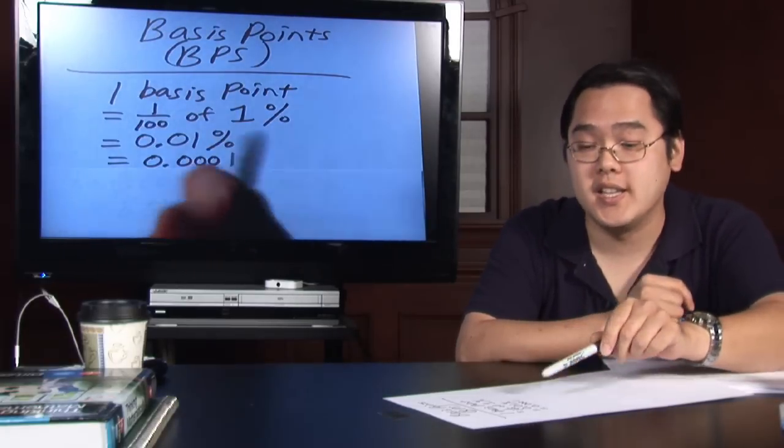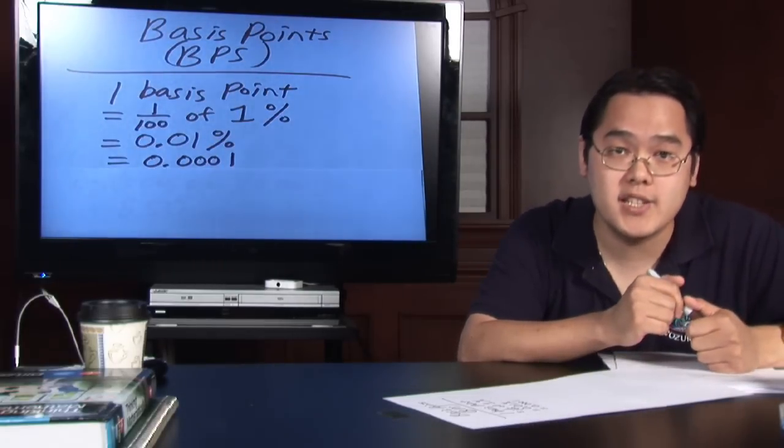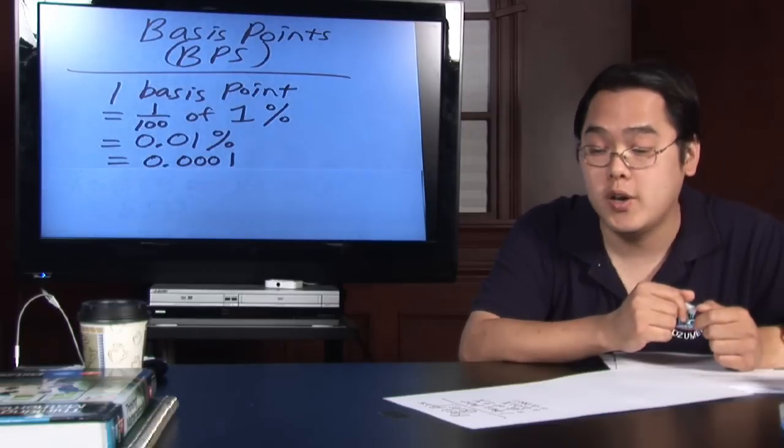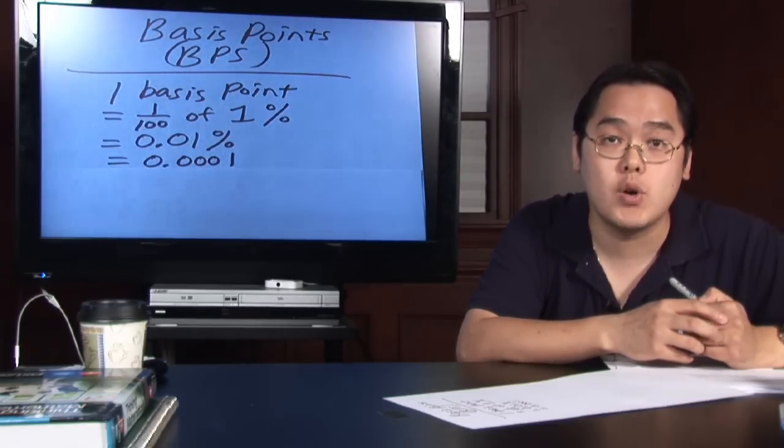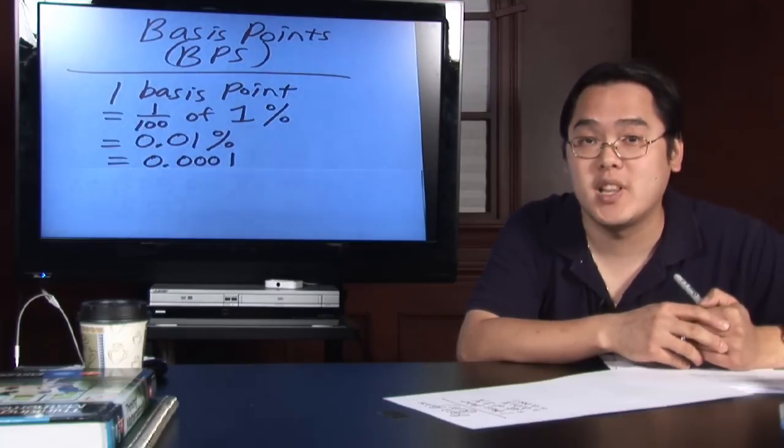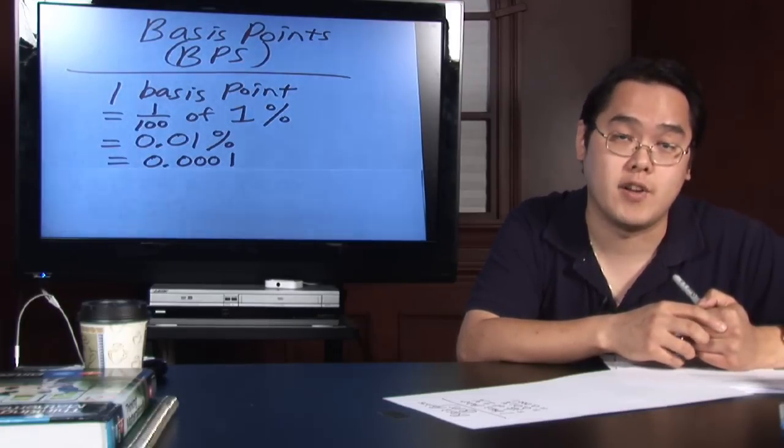One one hundredth of 1% is 0.01%, which is very, very small, but it's 0.0001. You have to shift the decimal to the left four places to help figure out some things.